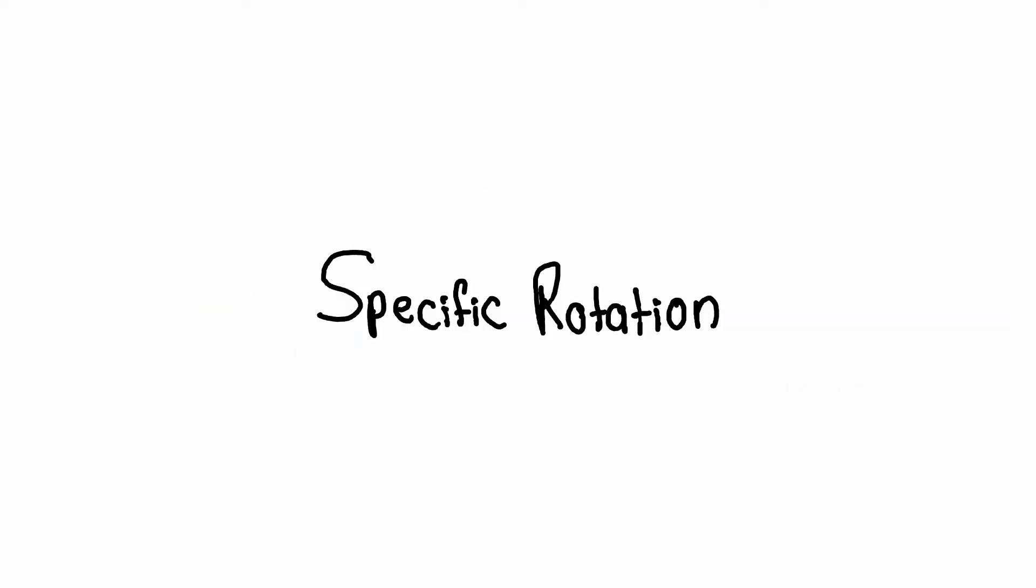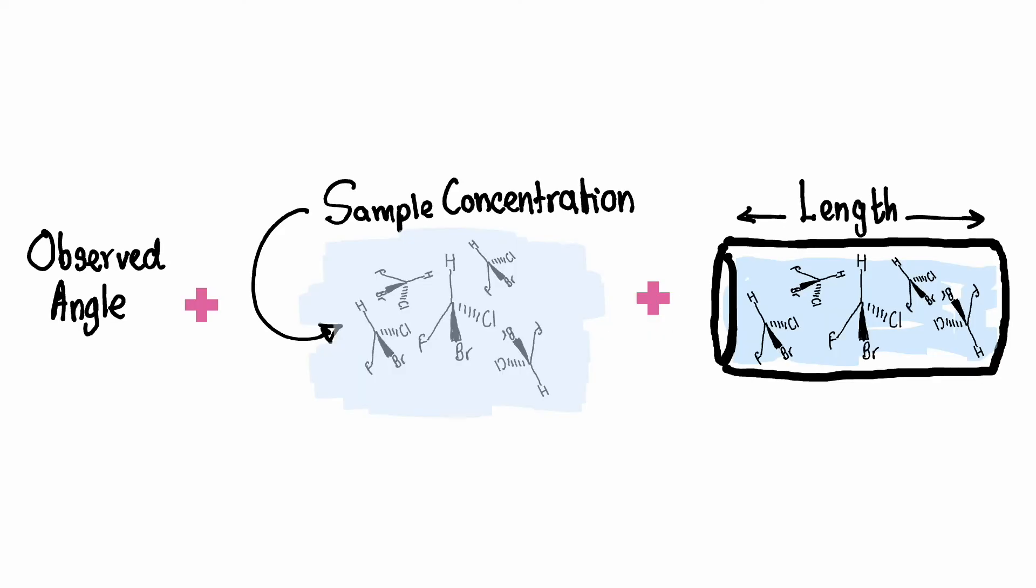The specific rotation is a standardized value that represents the optical activity of a substance. It is calculated using the observed rotation, the concentration of the sample, and the path length of the sample cell as was noted before.